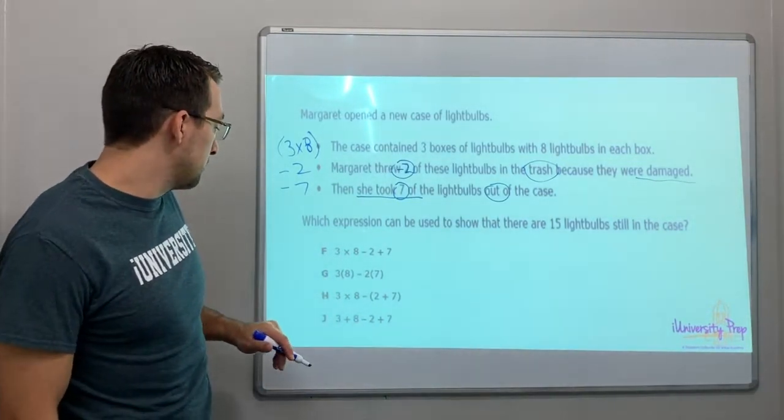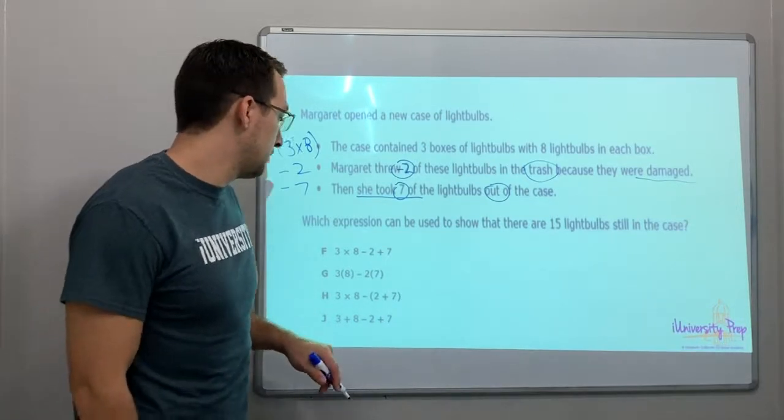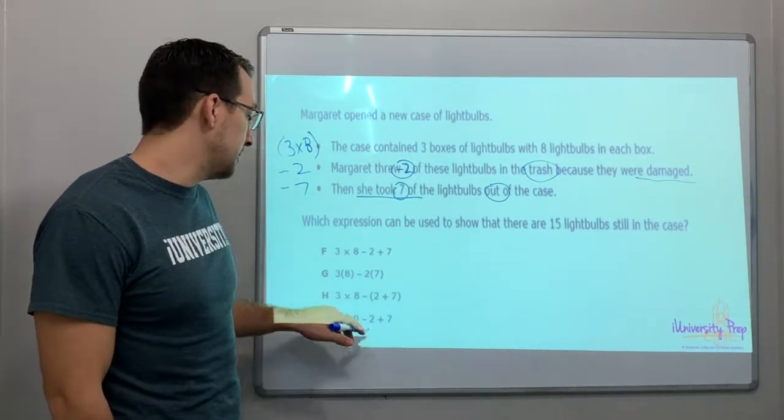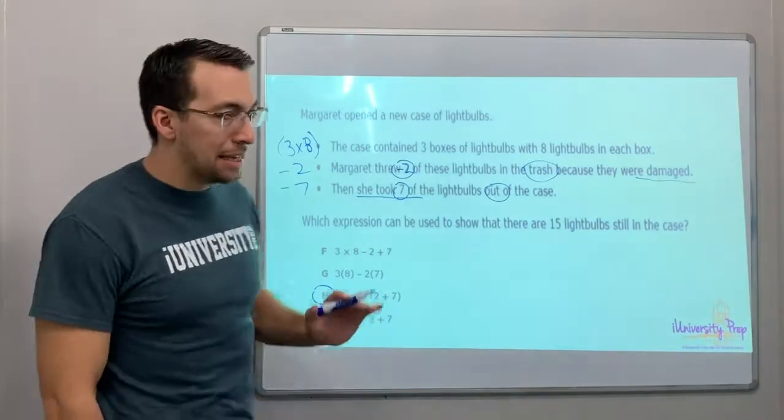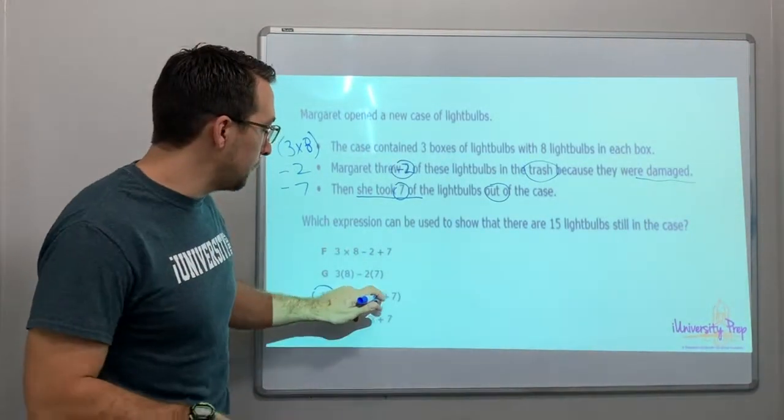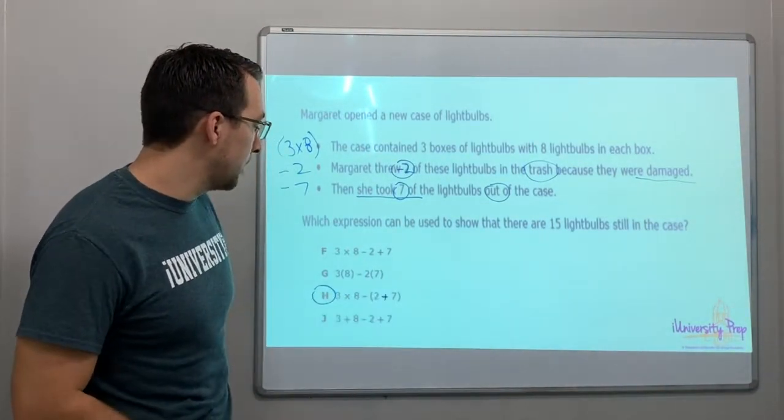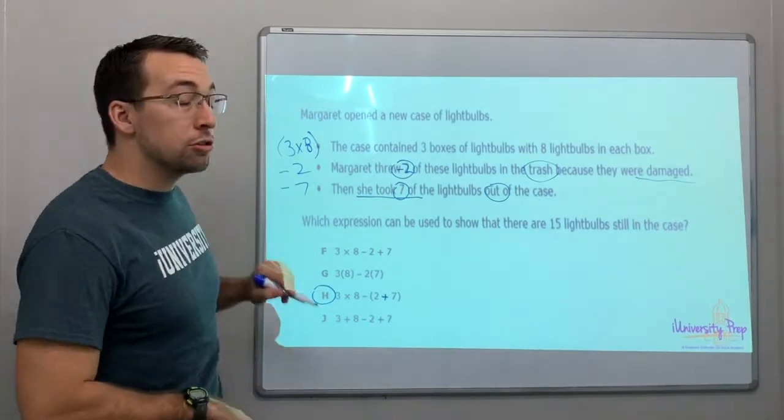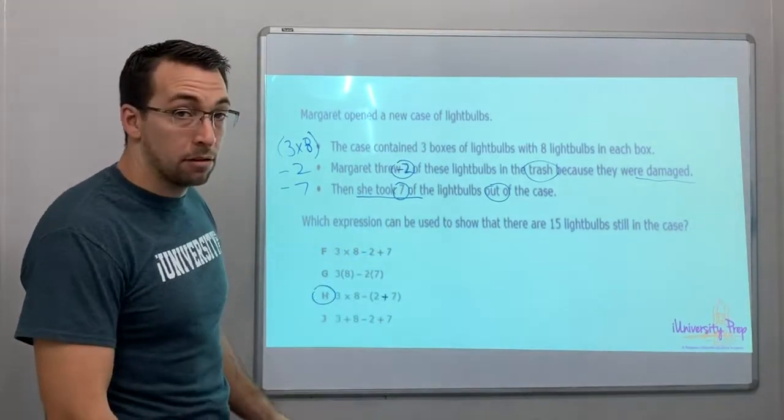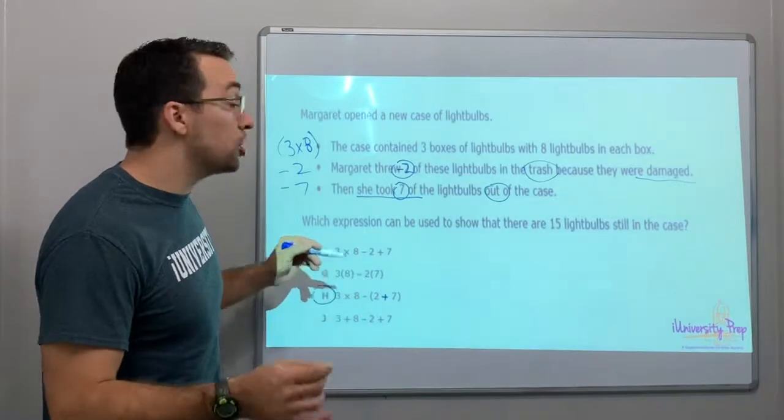Alright, here it is - H. Why is it H? Because look, it's confusing because it's plus 7, right? If she took out 2 and she took out 7, that's like saying she took out 9.